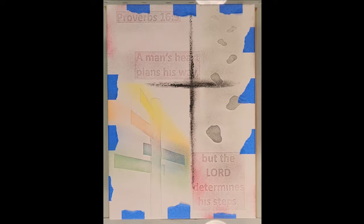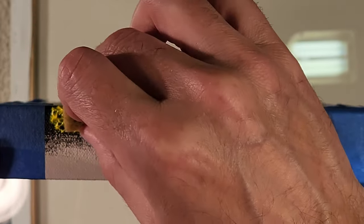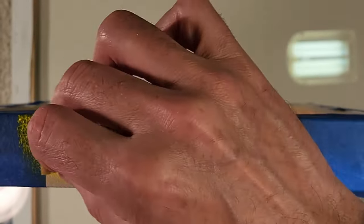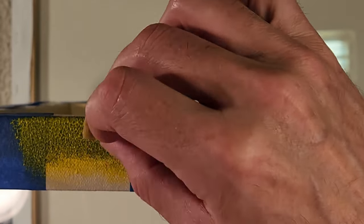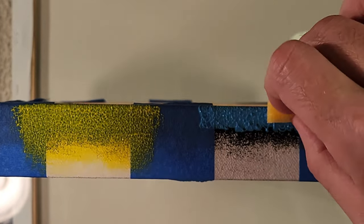You're going to do this all the way around the canvas, let it dry. After you get it thick and you can't see the black underneath the paint anymore, then you're going to go back,